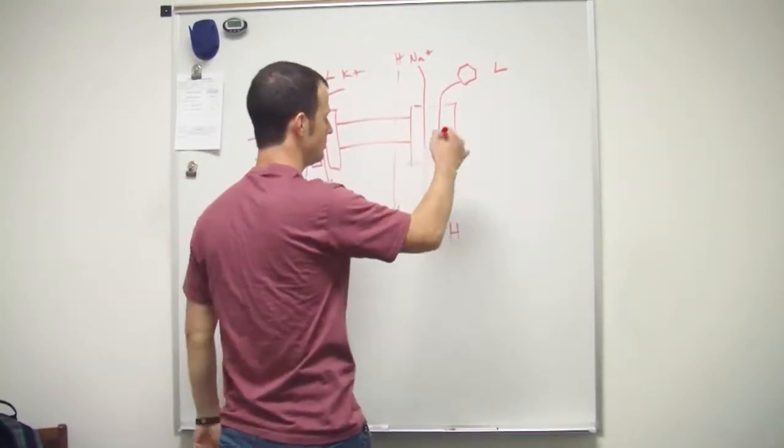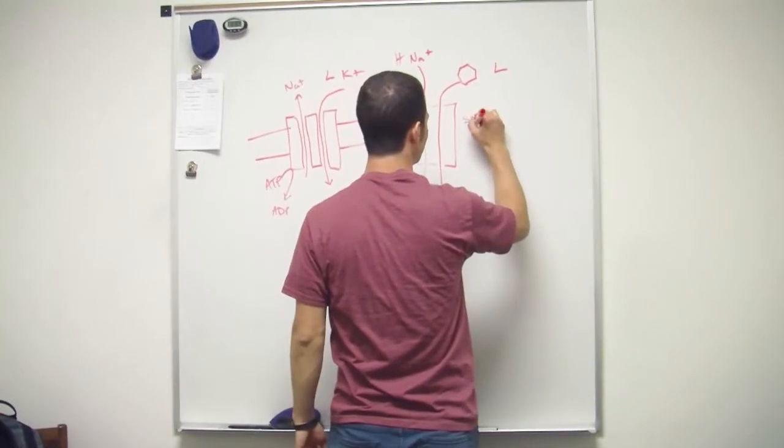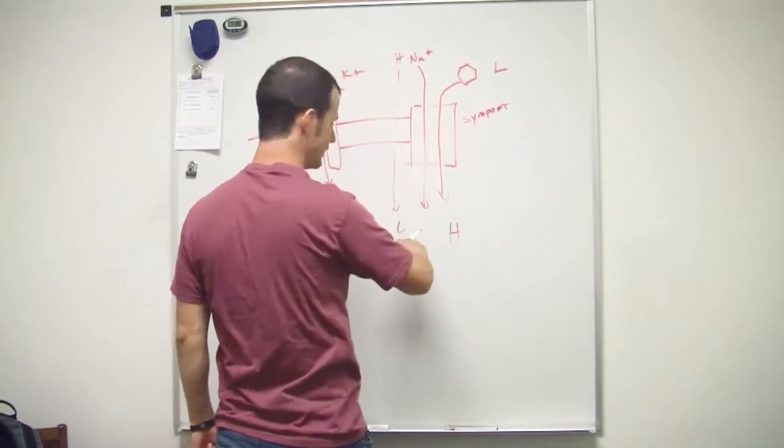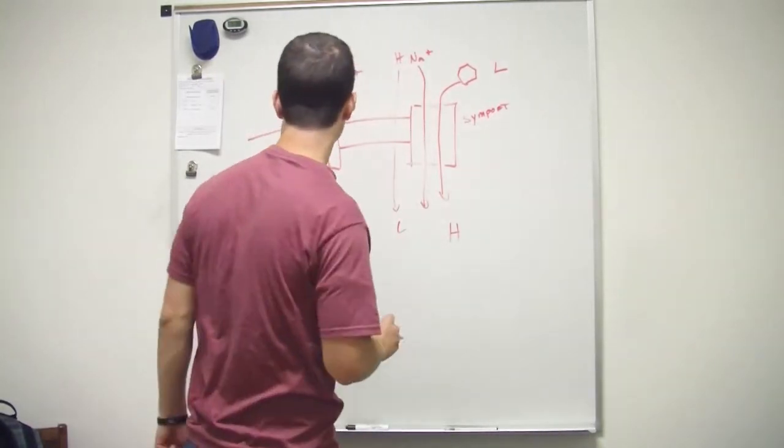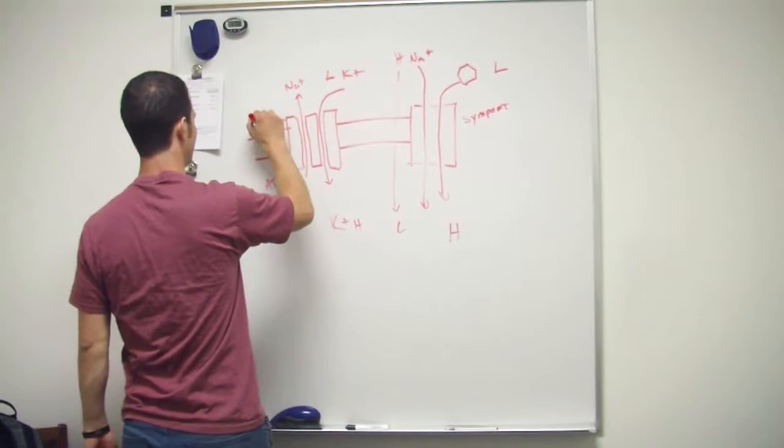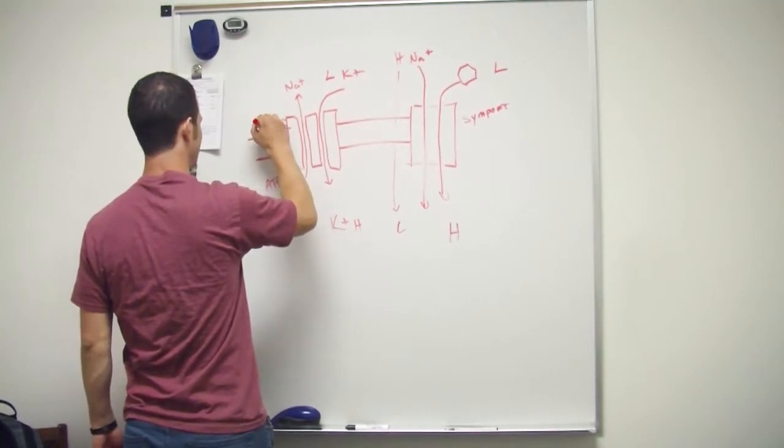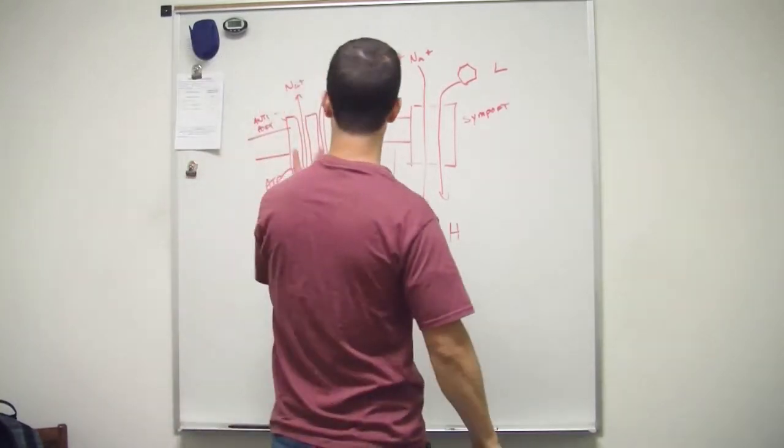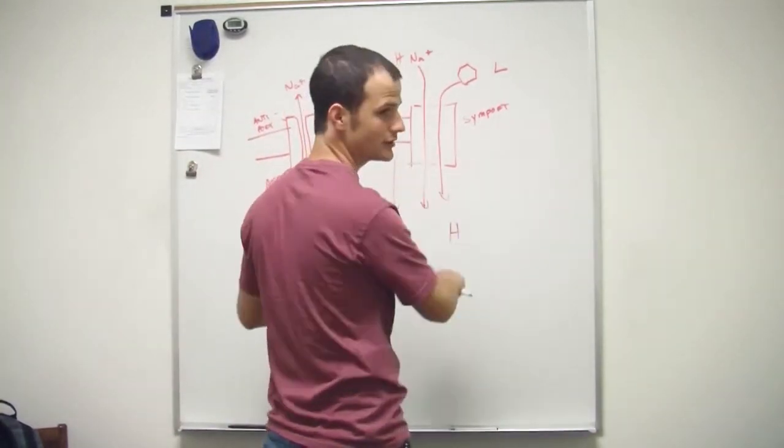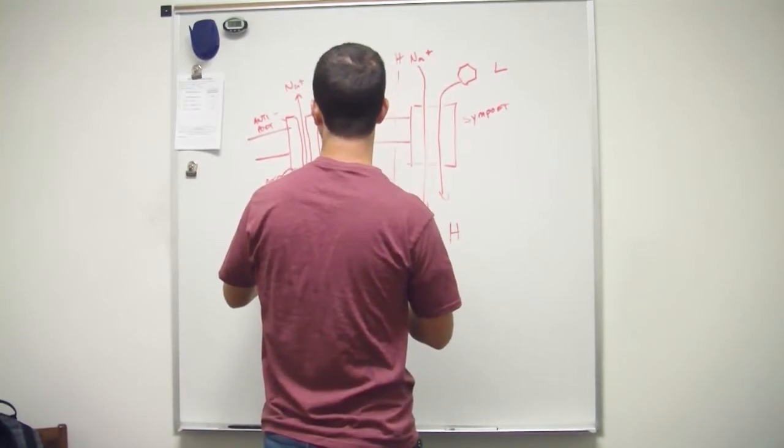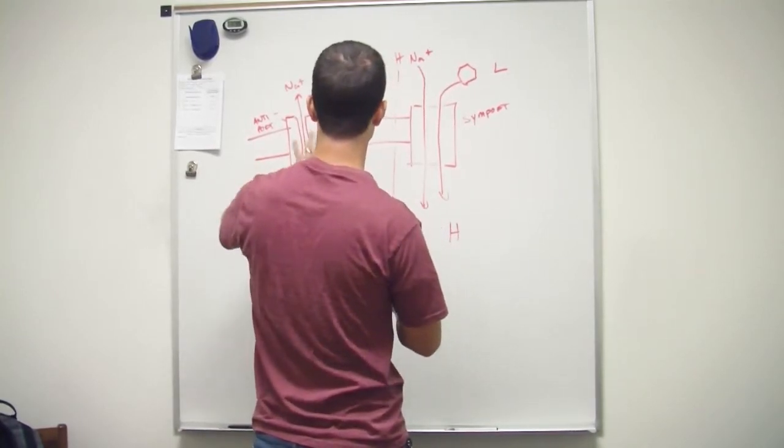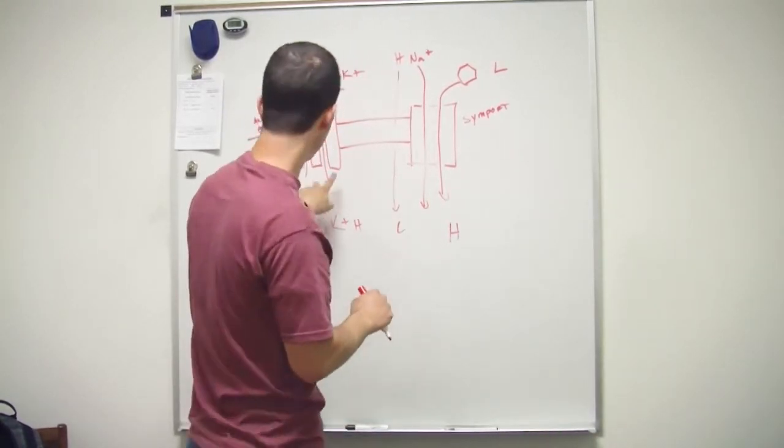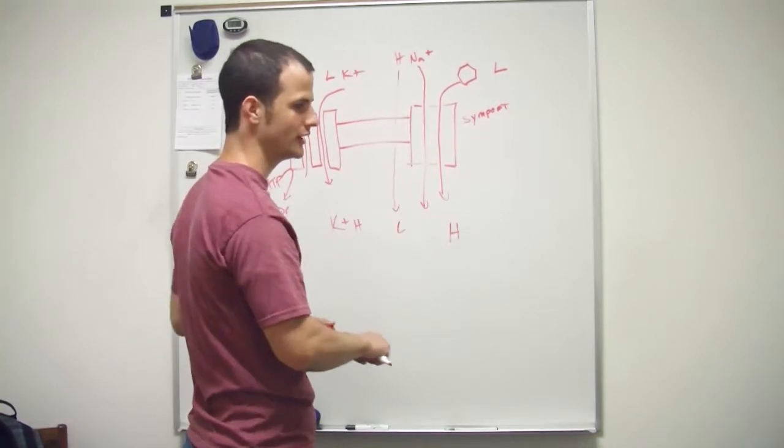And there's a couple of words that determine, because this is just one example. This would be an example of symport, because the two things are going in the same direction. If they're going opposite direction, it'd be antiport. Just kind of some terminology. And it could be two antiports, it could be two symports, or technically this doesn't always have to be two things. It could just be one thing creating a concentration gradient, but usually it's coupled with something else to kind of make it more efficient.